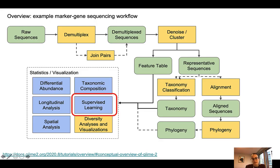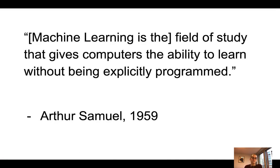Machine learning as a phrase has lots of different definitions. One of the first definitions of machine learning is the one by Arthur Samuel. According to his definition, machine learning is the field of study that gives computers the ability to learn without being explicitly programmed. Rephrasing this definition, we can say that machine learning models are models that are learned from data.